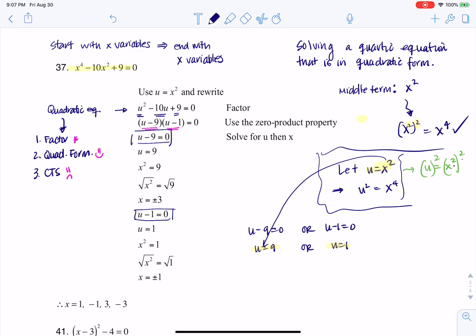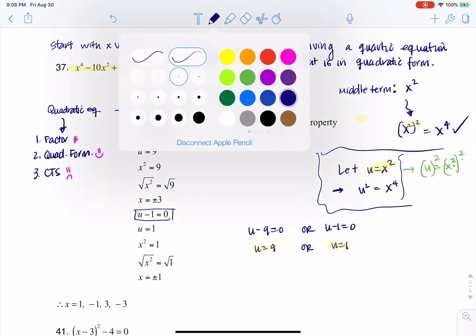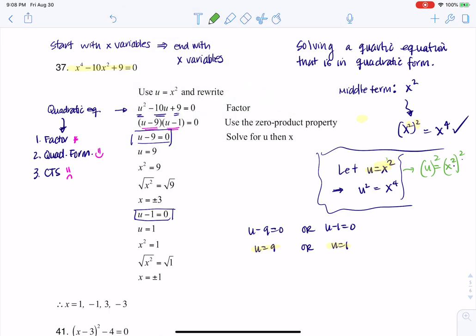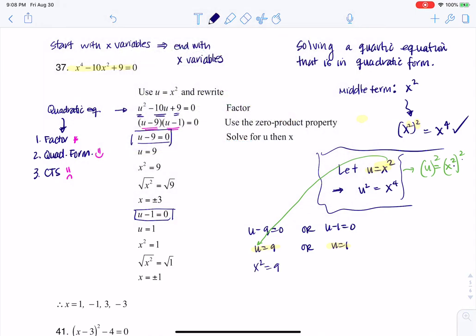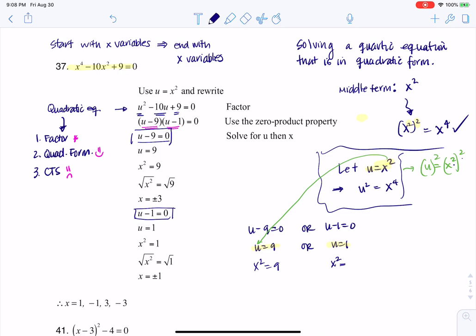We do have this relationship that u is equal to x squared. So what that means is I'm going to substitute that in. Oh, let me use a different color. I'm going to substitute that in right here. I'm going to take u is equal to x squared, and I'm going to sub back. So then I know that x squared is equal to 9, or x squared is equal to 1.